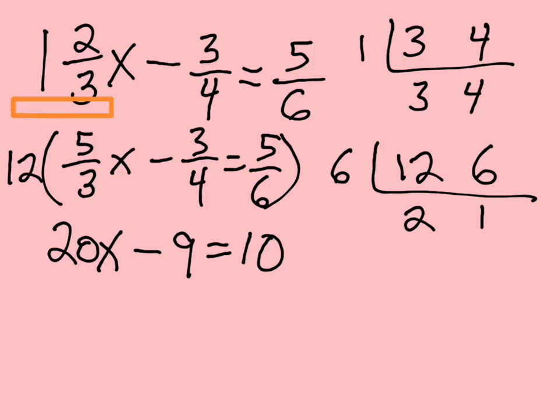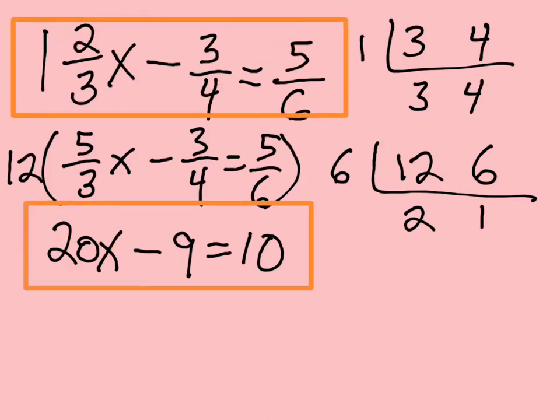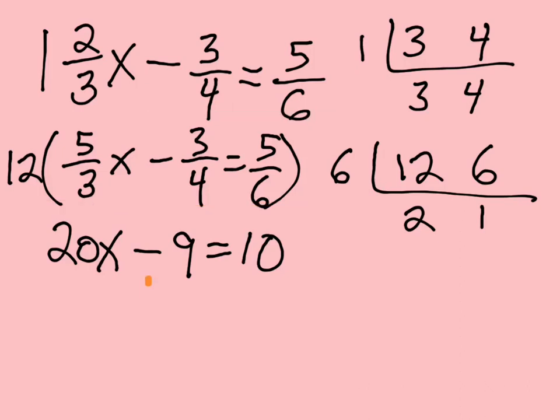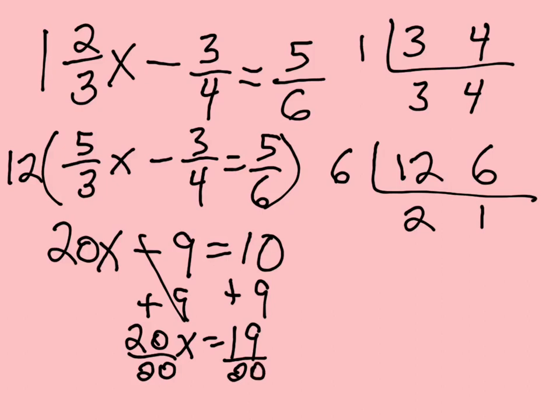I want you to remember that this problem is equivalent to this problem, and I sure as heck would rather solve the second problem. So then we solve the second problem. We can add 9 to both sides. Poof, that goes away. We get 20X equals 19. Divide both sides by 20, and you get X equals 19/20.